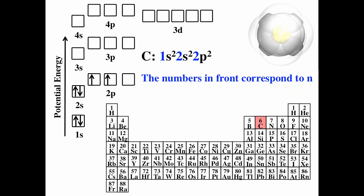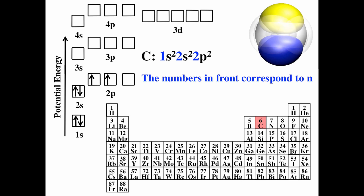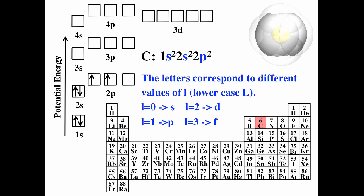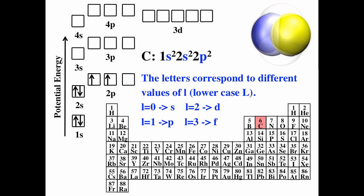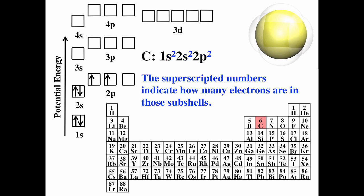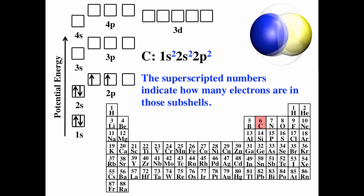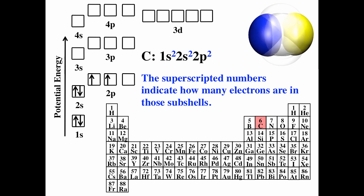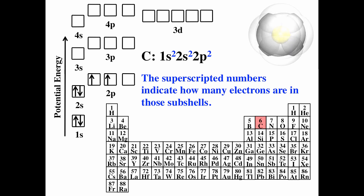The numbers in front correspond to n. p corresponds to l equals 1, d corresponds to l equals 2, and f corresponds to l equals 3. The superscripts indicate the number of electrons in that subshell. So for carbon, we have two electrons in the 1s, two electrons in 2s, and two in 2p. In a visualization, that would be the 1s orbital, the 2s orbital, and three 2p orbitals, all stacked right on top of the nucleus.